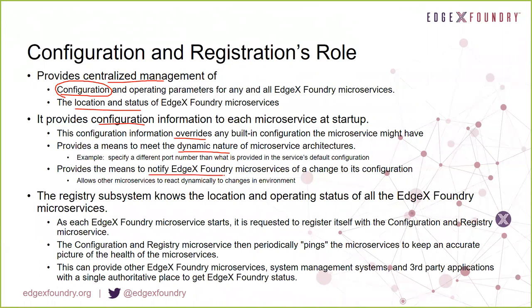It also provides a means to notify EdgeX microservices when a configuration change has occurred — either to the same service or to other services. For example, if we dynamically changed the port of one of our microservices, other microservices may need to know that so they know to call on that microservice at the new port. There is a means within the configuration registration microservice for a broadcast to go out telling other microservices that a configuration change has occurred.